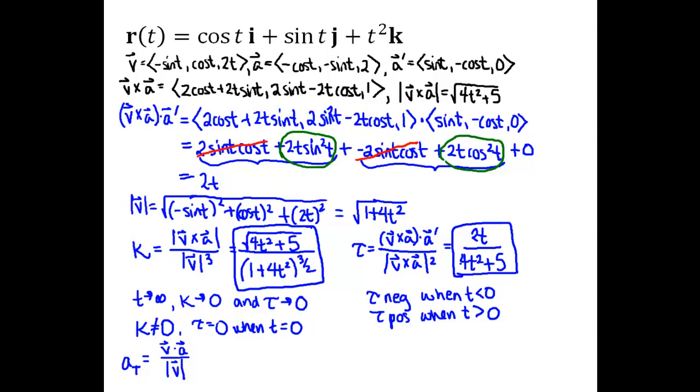Another formula that I might choose to use for the tangential component of acceleration is the derivative with respect to time of the speed. I do have the speed function, I could take the derivative of that, or I could do this V dot A divided by the magnitude of V, and I'll get the same answer either way. I'm going to use the V dot A formula.